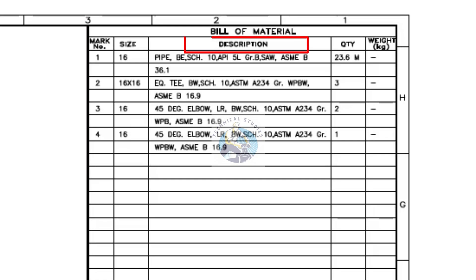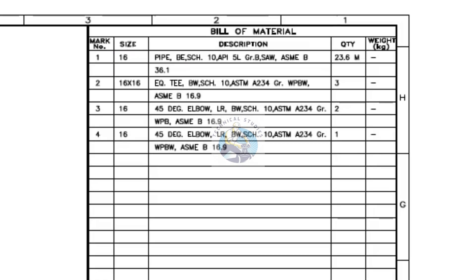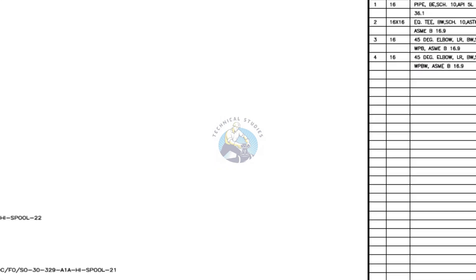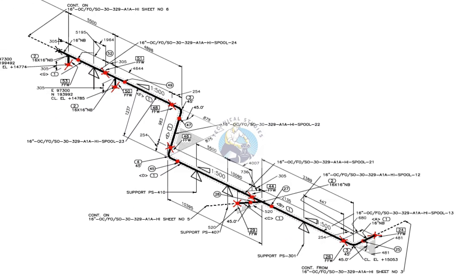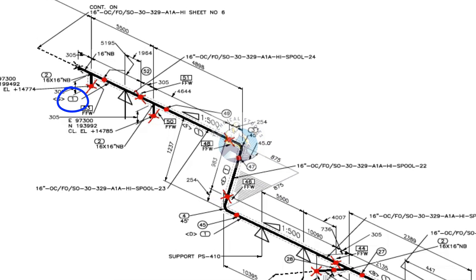Now let's look at the description for item number 1. It is a pipe with a bevel end, schedule 10, grade B, manufactured through submerged arc welding (SAW), with a quantity of 23.6 meters. The pipe size is 16 inches. Item number 1 refers to cut pipes.